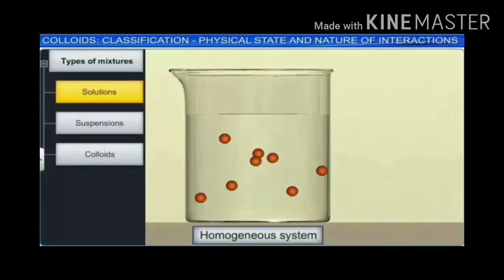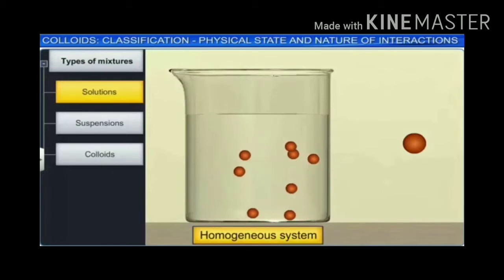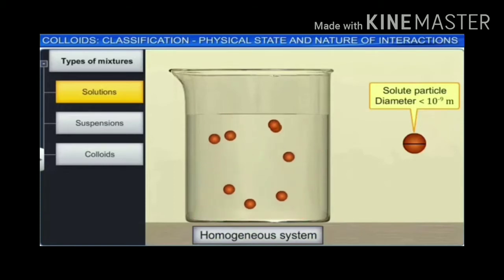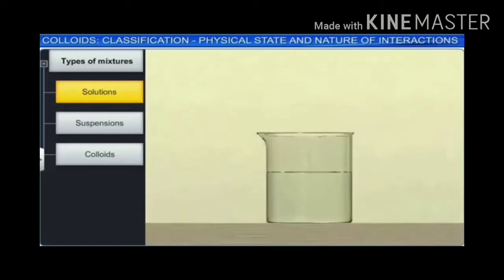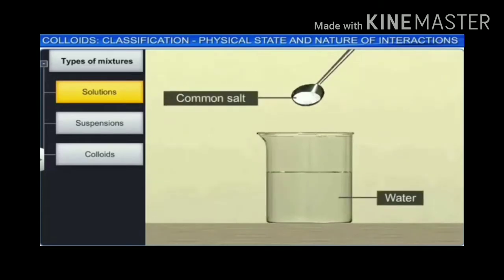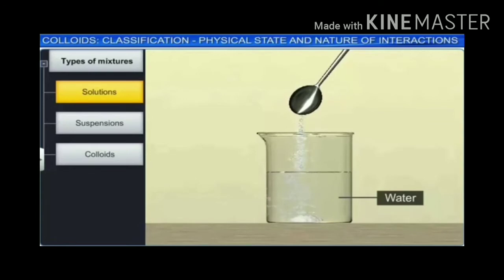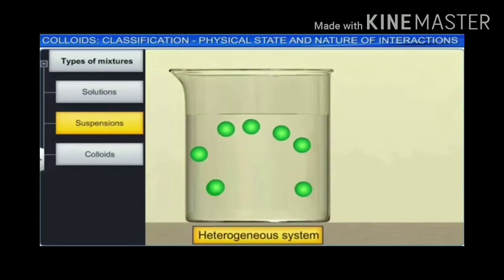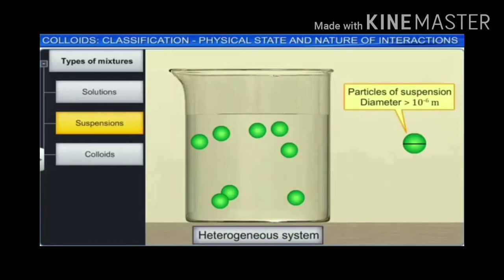Solutions are homogeneous systems in which the diameter of the solute is less than 10⁻⁹ meters. These particles are not visible to the naked eye. Common salt in water is an example of a true solution. On the other hand, a suspension is a heterogeneous system. The particle size in a suspension is more than 10⁻⁶ meters, and these particles can be seen with the naked eye. Sand in water is an example of a suspension.